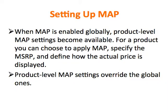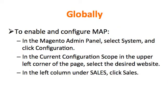When MAP is enabled globally, product-level MAP settings become available — for a product you can choose to apply MAP, specify the MSRP, and define how the actual price is displayed. Product-level MAP settings override the global ones — keep that in mind. To enable and configure MAP, in the Magento admin panel select System and click Configuration. In the current configuration scope in the upper left corner of the page, select the desired website.